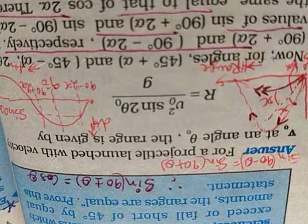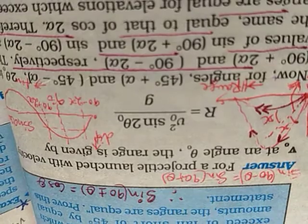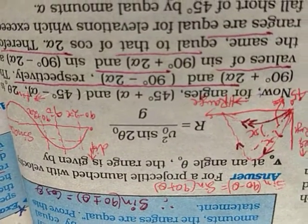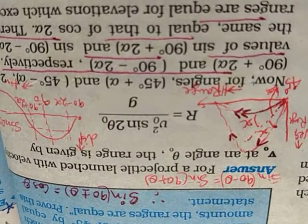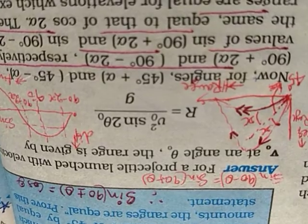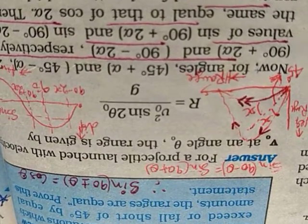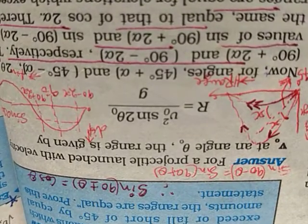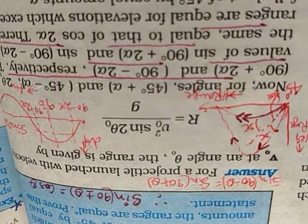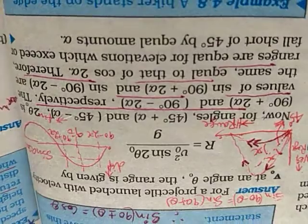And g is acceleration due to gravity. In this case, you see that whether you put theta equal to 45 plus x or you put theta equal to 45 minus x, in both the cases you will have the same value for horizontal range